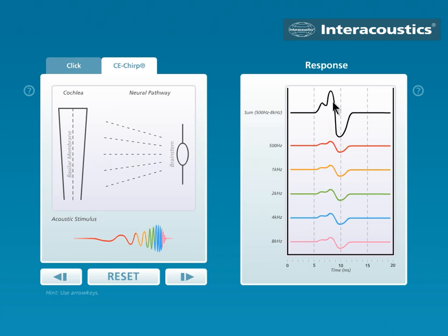And we get this very, very nicely defined large response. Actually, up to two times response amplitude is the benefit of the CE-CHIRP compared to the CLICK.